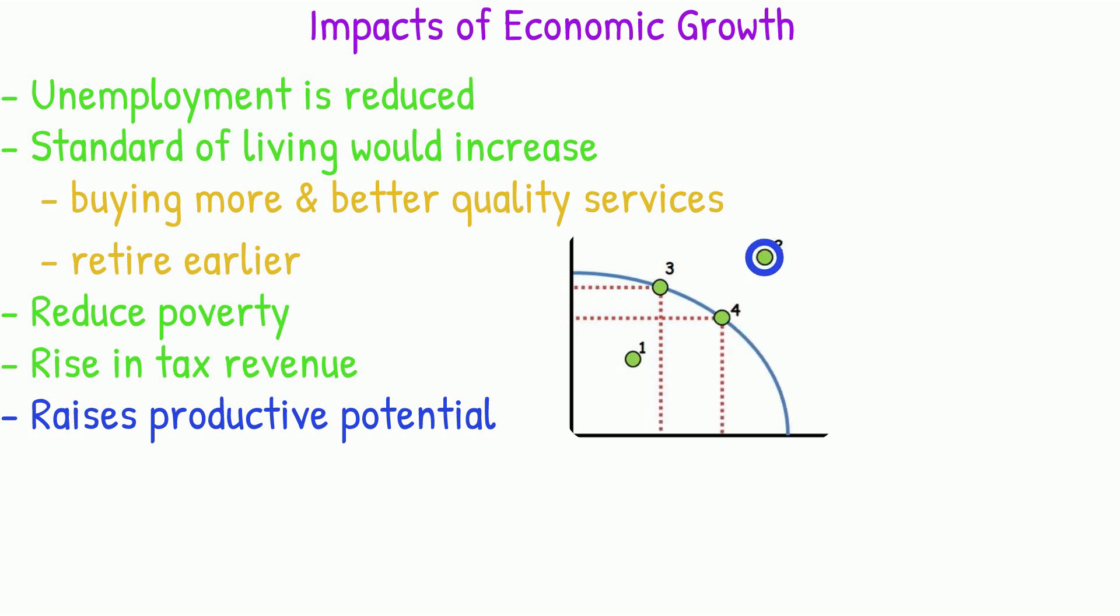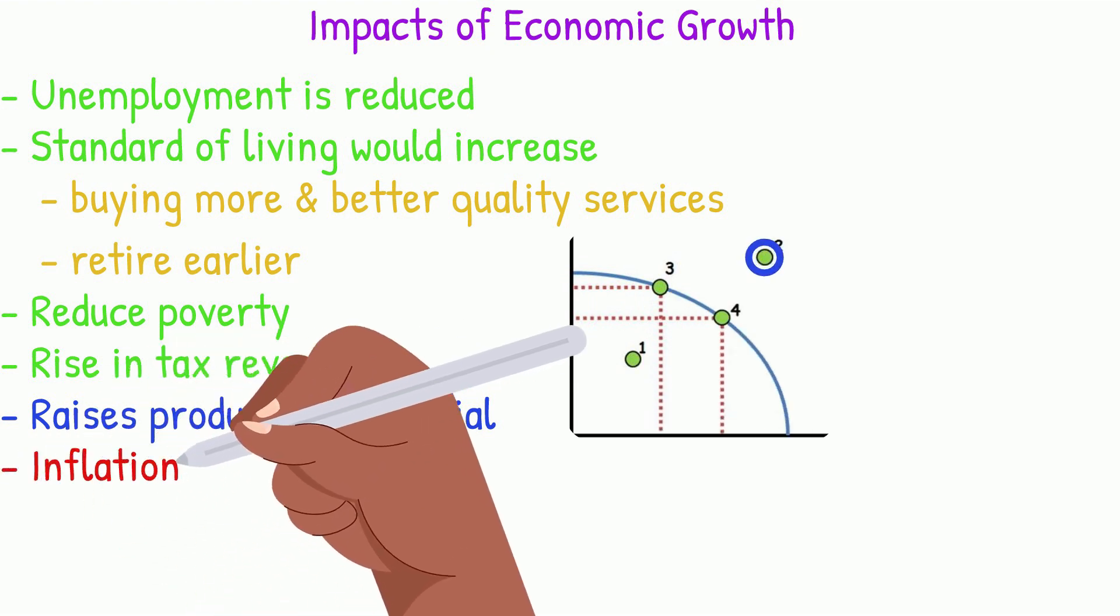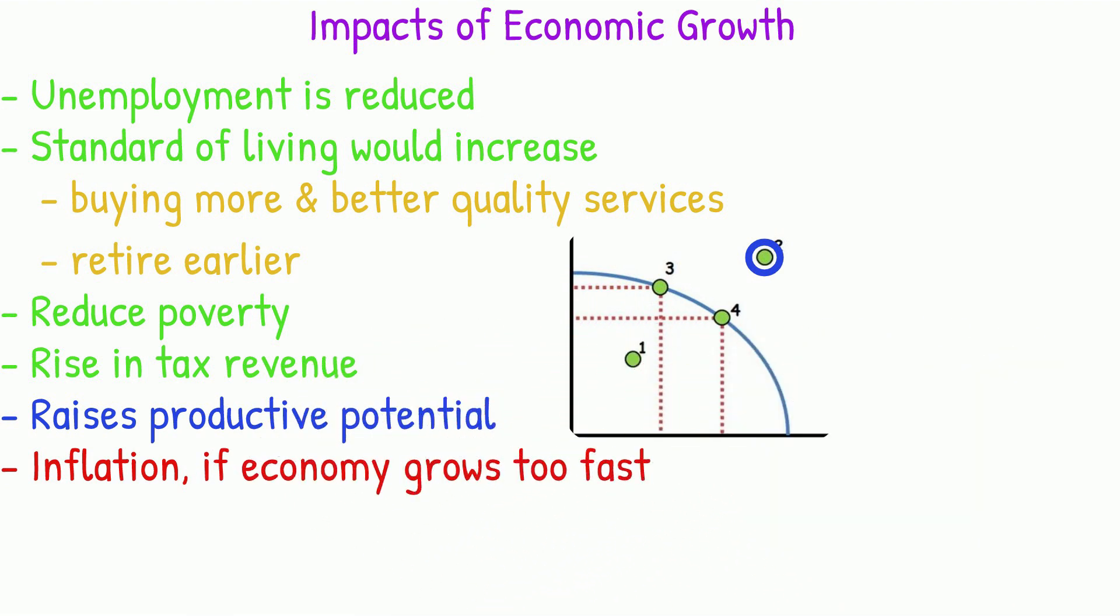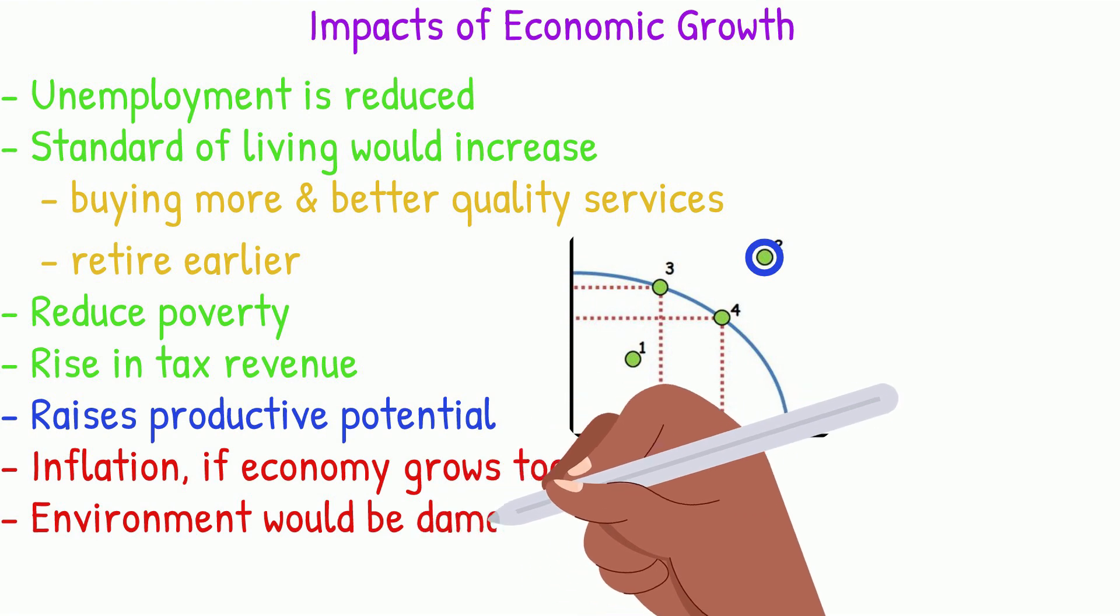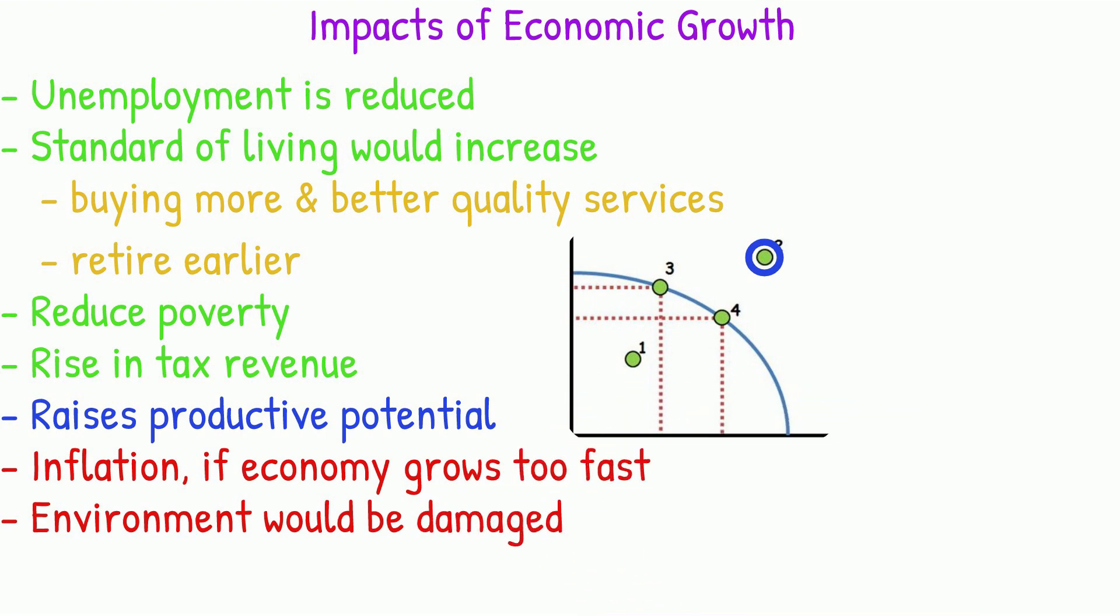Some negative impacts are inflation which would occur if an economy grows too fast. This is called overheat where demand rises too fast causing prices to rise dramatically. The environment would most likely be damaged due to economic growth because of pollution, greenhouse gases etc. This is called unsustainable growth.